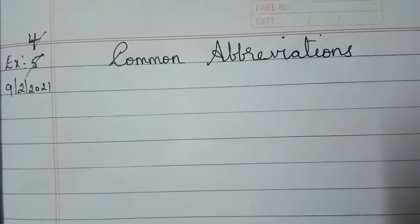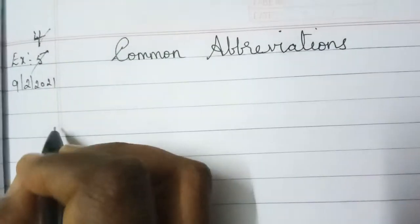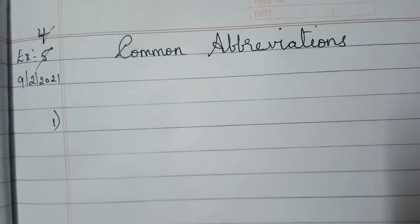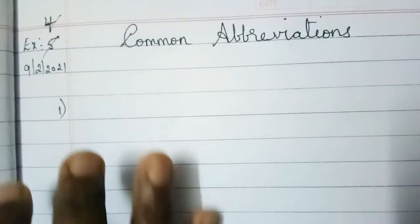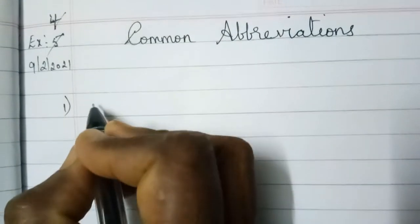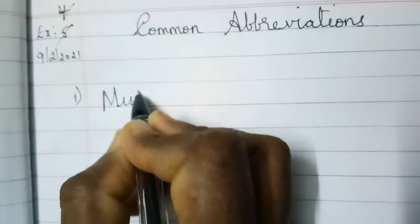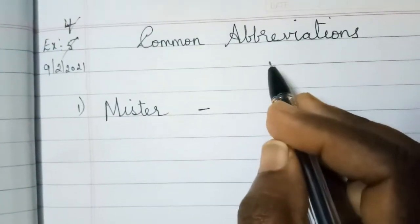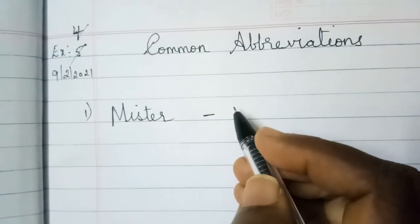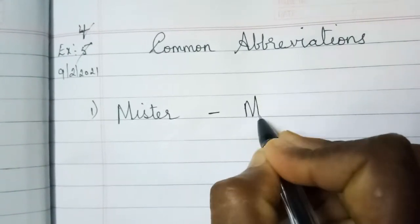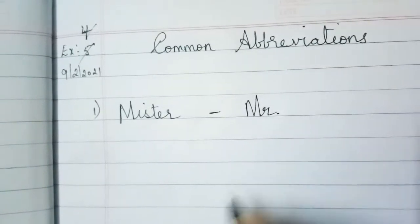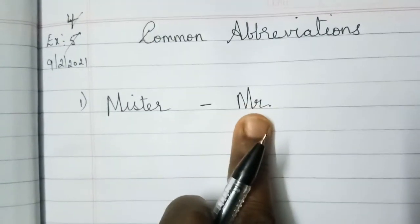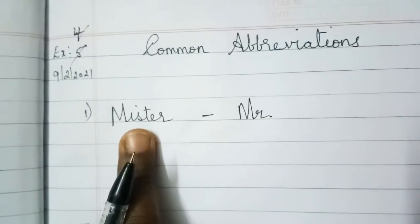Now I am going to write few common abbreviations. You also can copy down the same thing in your English composition book. First one, Mister. The short form, the abbreviation. For example, in wedding card and in many things, they write like this, Mister only M-R. The actual one is mister.